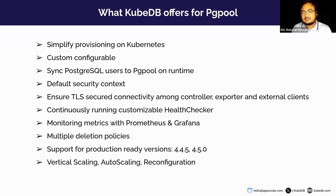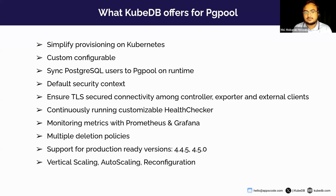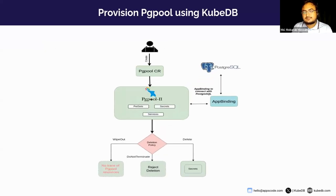We have multiple deletion policies with KubeDB. We also support production-ready versions for PgPool — there are two versions available right now: 4.4.5 and 4.5.0. Currently we have three types of ops requests for the lifecycle management of PgPool: one is vertical scaling, another is auto scaling, and the last one is reconfiguration.